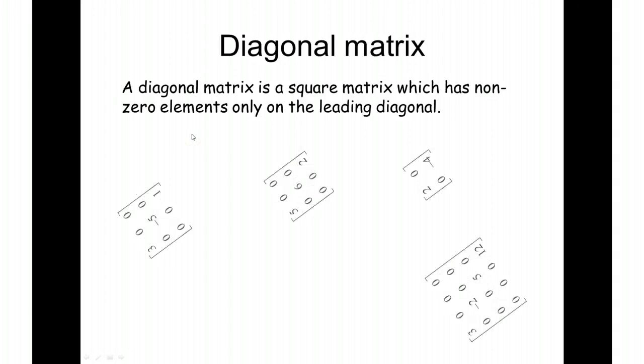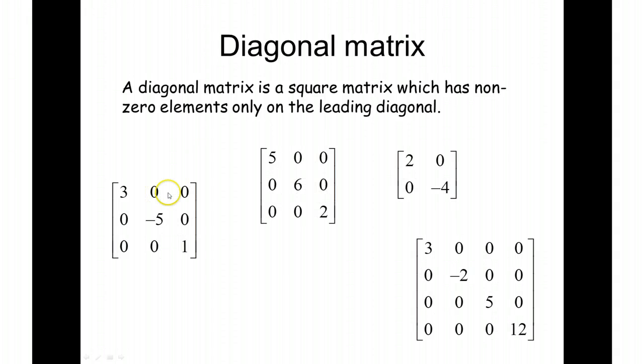So similar to our identity matrix, we're going to have everything as zero apart from on the leading diagonal and we've got values along there. So these are all examples of diagonal matrices.